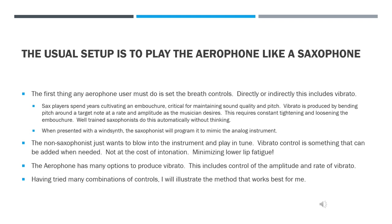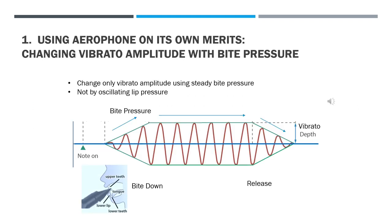The Aerophone offers many options for producing vibrato, including control over amplitude and rate. After experimenting with various combinations, I'll illustrate the method that works best for me. The Aerophone can be programmed to change vibrato amplitude with bite pressure. The illustration shows the desired outcome where vibrato amplitude can be adjusted with steady pressure on the bite sensor.